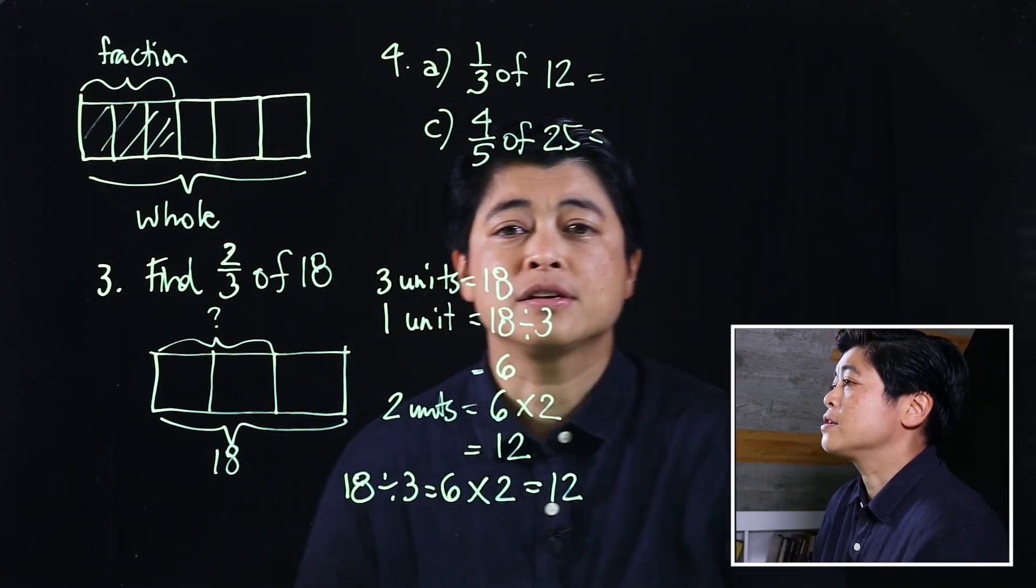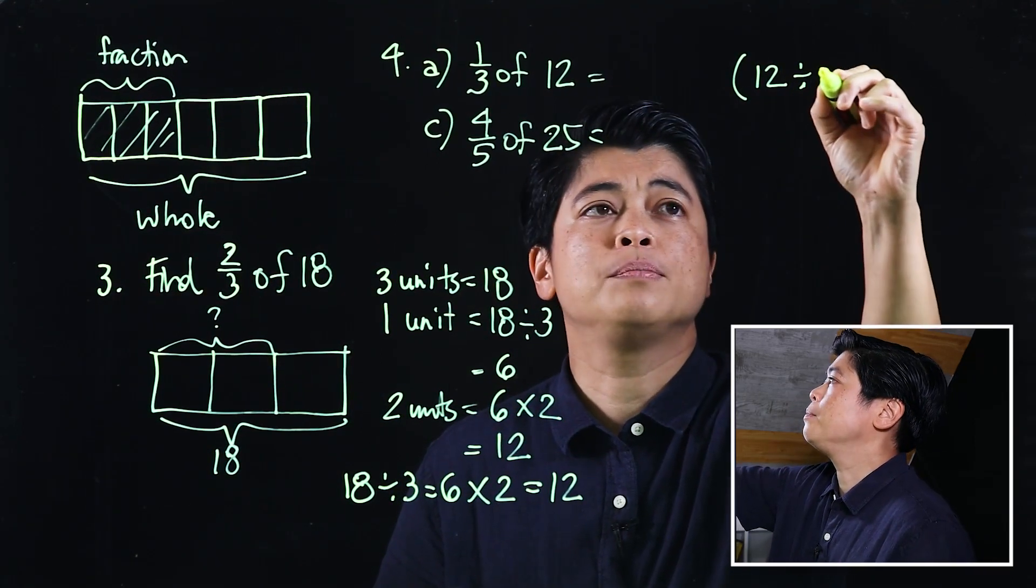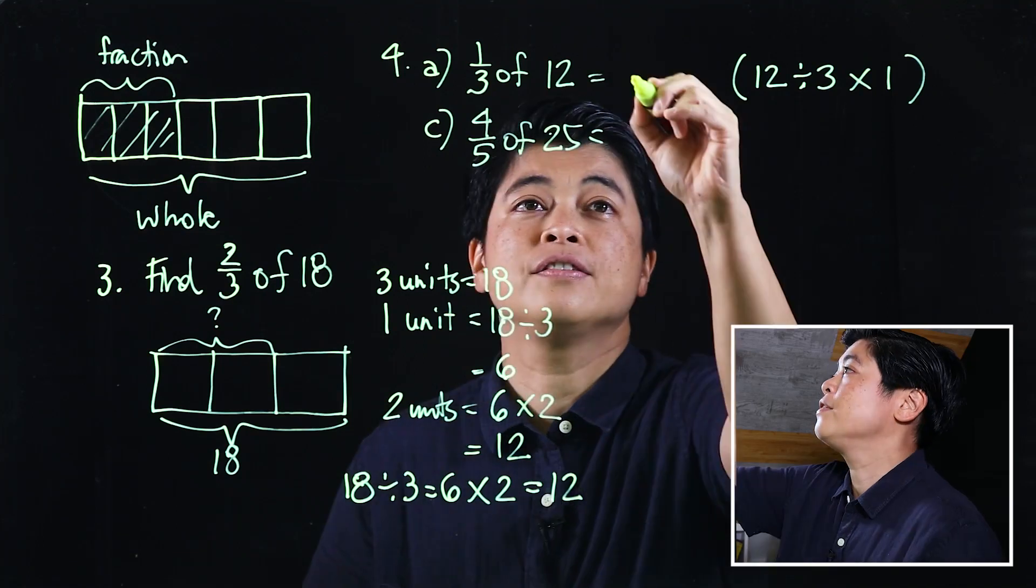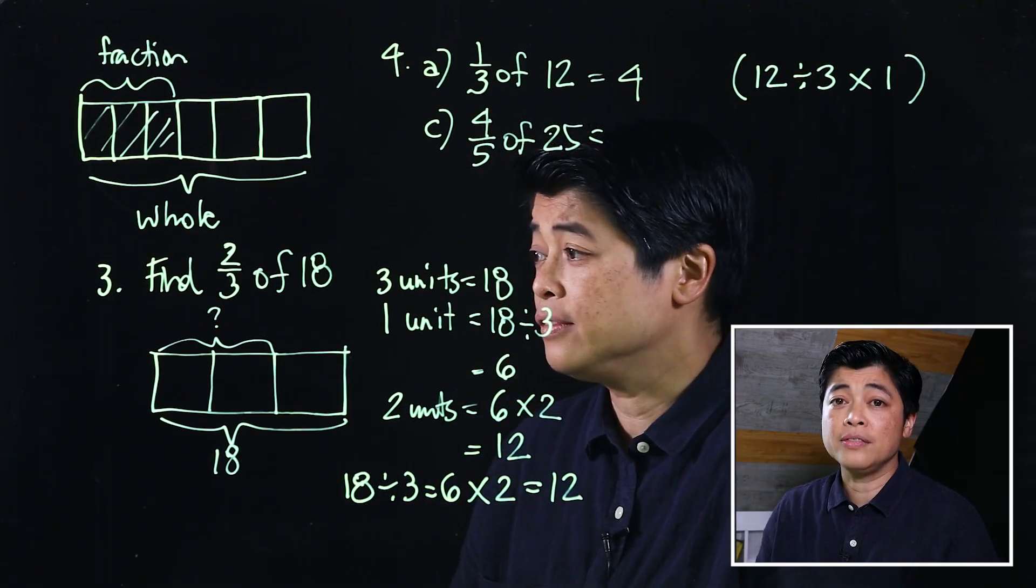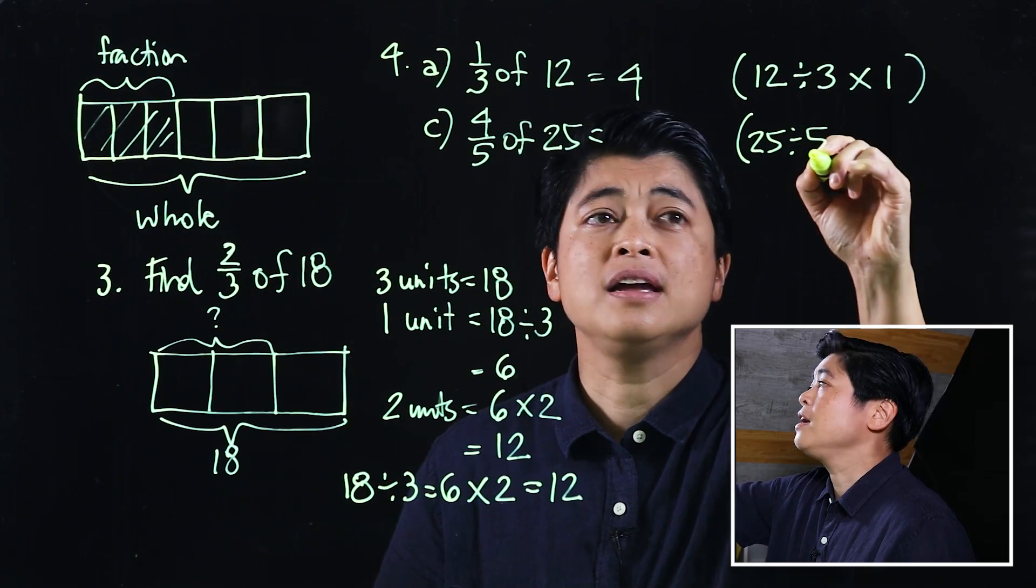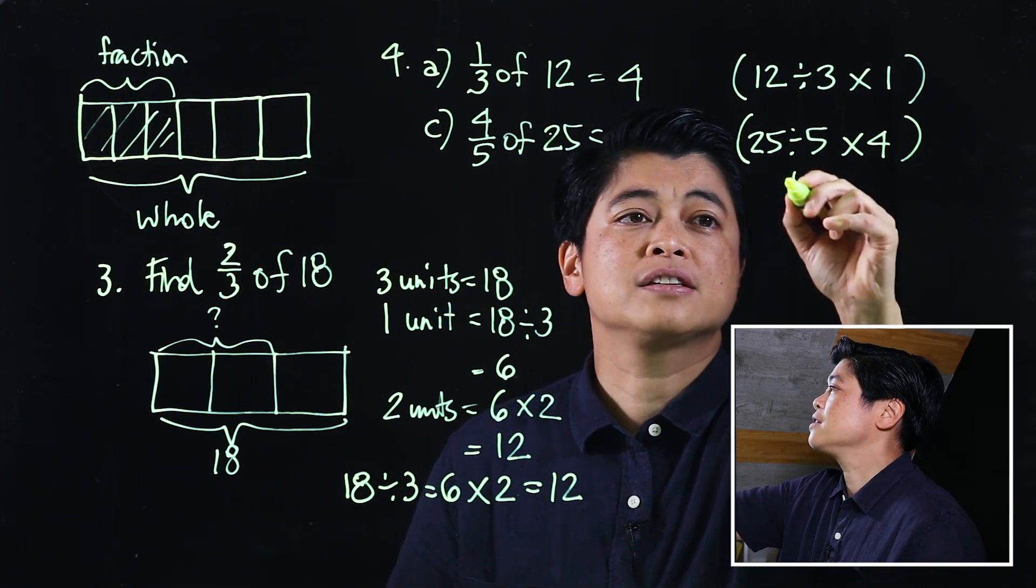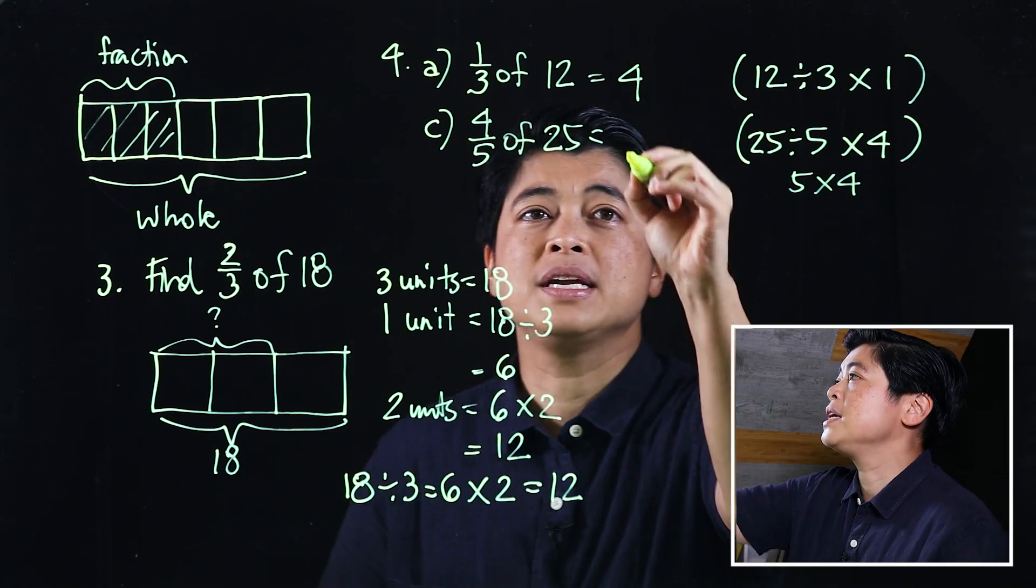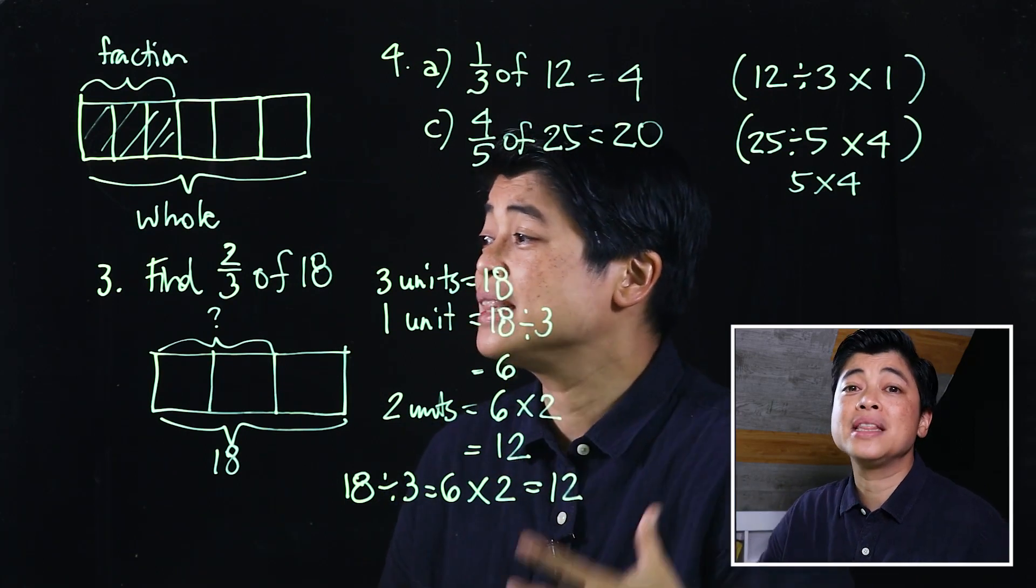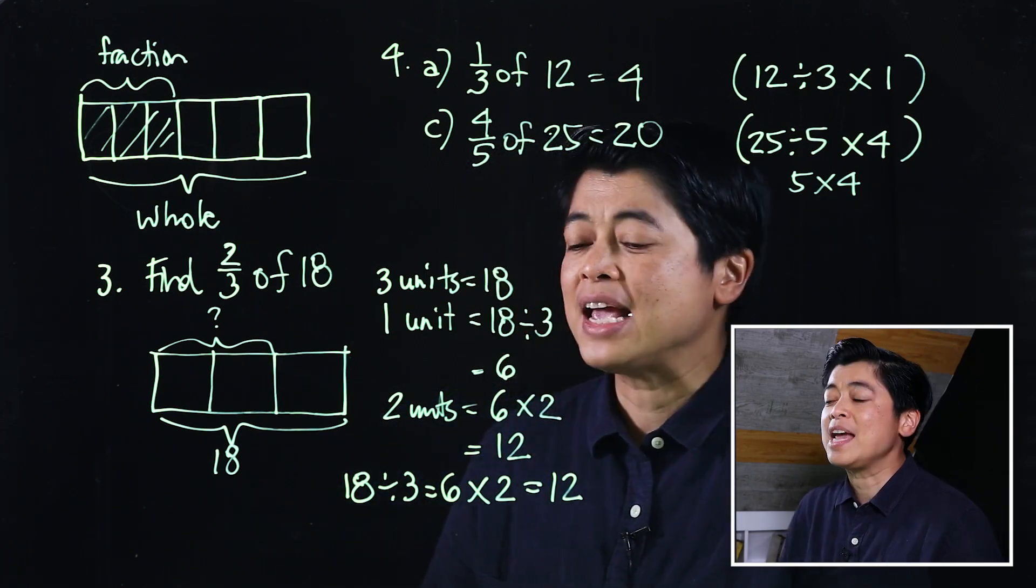Following my approach, I'll put my equation here. This will be 12 divided by 3, which is 4, and then we multiply by 1, which is still 4. So that means one-third of 12 is 4. Similarly, I'll put my equation here: 25 divided by 5, which is 5, and then we multiply by 4. So that's 5 times 4, which means this is 20. If we follow the book, it's just more steps but doing the same exact thing in just one go.